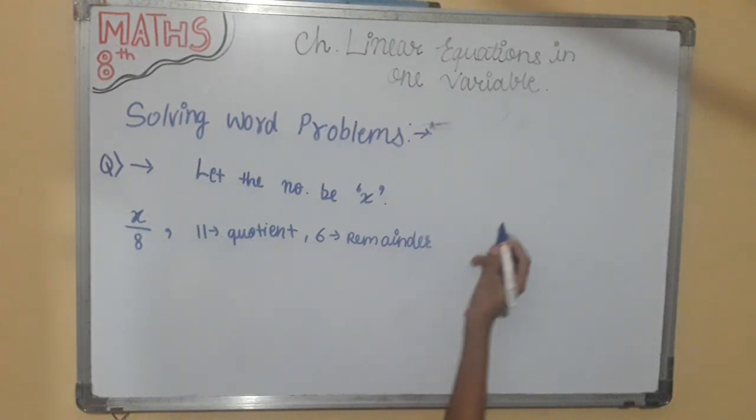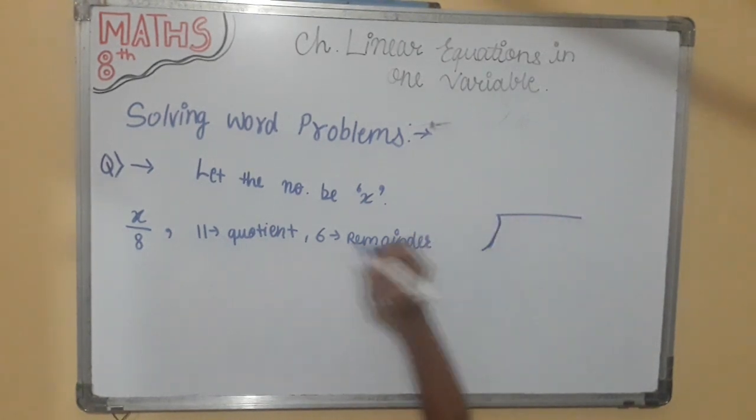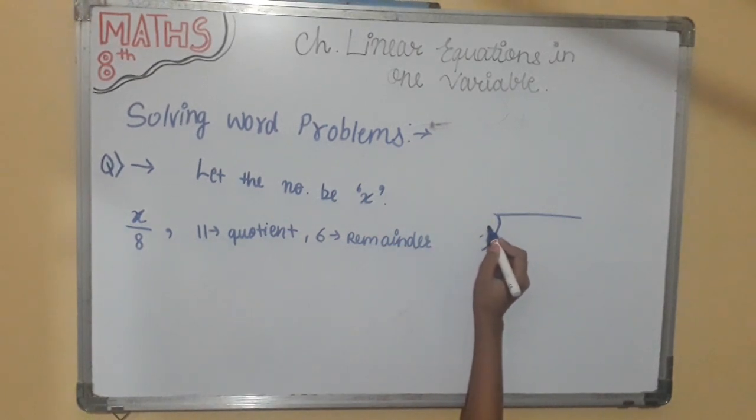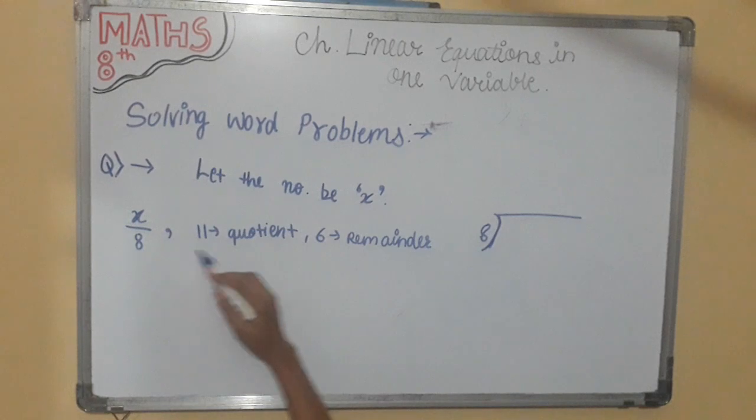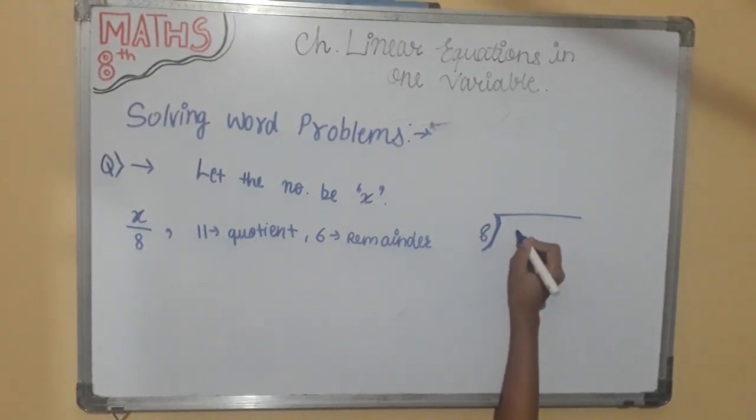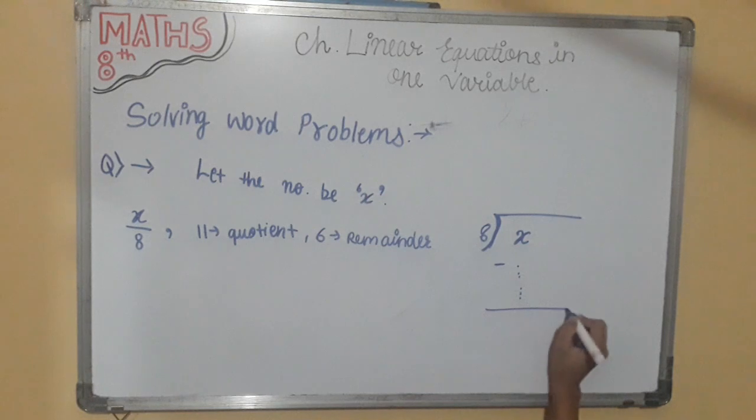As we know, when we divide any number, 8 was in numerator, it will come at this side. And by doing all the process, the final remainder is 6. So this is the remainder, the remaining number.